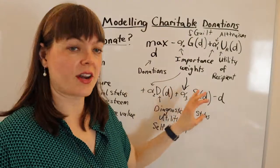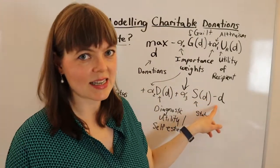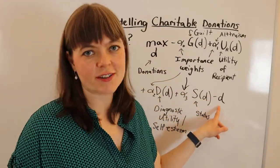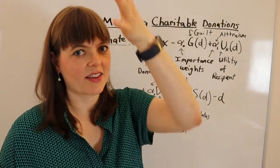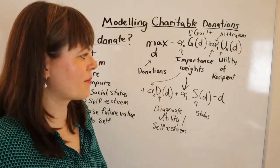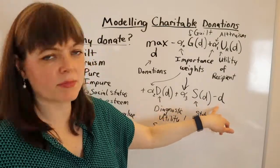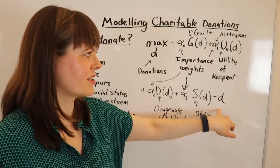And then our cost, all of these are benefits of donating. Our cost is simply going to be D. Now, of course, you could add curvature to this by saying the financial cost and having that increasing at the margin.